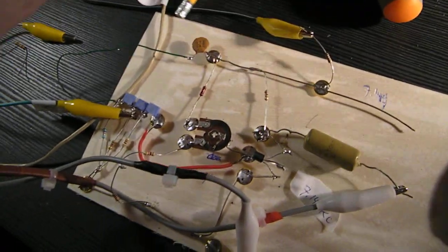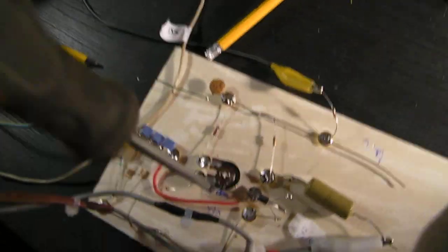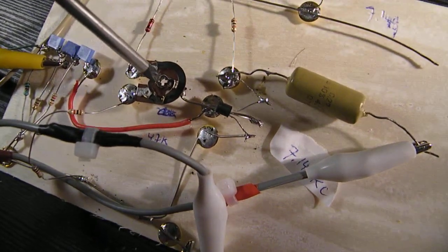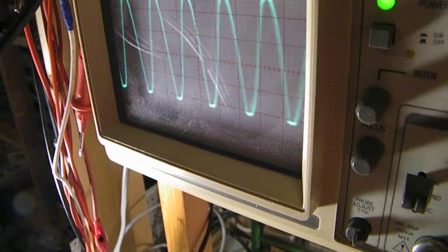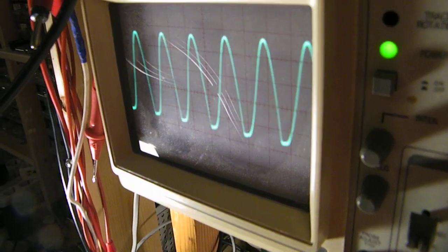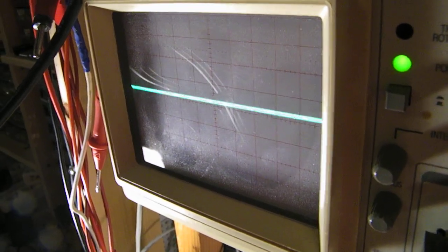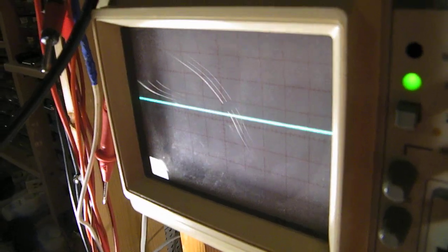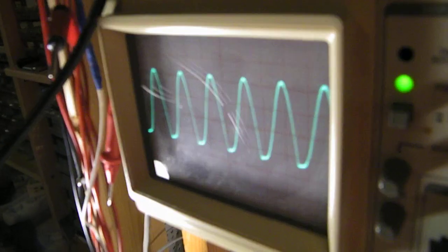And I want to demonstrate somewhat how critical that working point is. I change the working point now. So tiny differences on that potentiometer make that this circuit oscillates or does not oscillate.